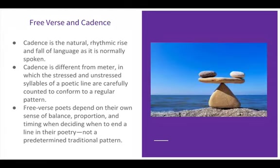Cadence is really important in free verse. Cadence refers to the natural rhythmic rise and fall of language as it is normally spoken. Cadence is different from meter, in which the stressed and unstressed syllables of a poetic line are carefully counted to conform to a regular pattern. Free verse poets rather depend on their own sense of balance, proportion, and timing when deciding when to end a line in their poetry — not a predetermined pattern of stressed and unstressed syllables. So free verse is more open, but it has natural and intentional cadence that the poets will choose based on their own aesthetic discretion.